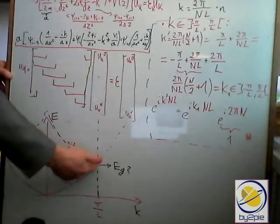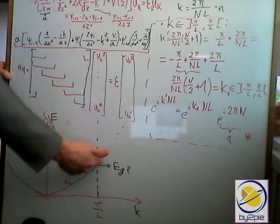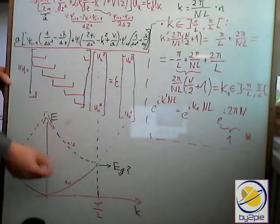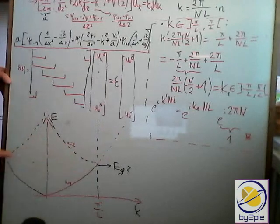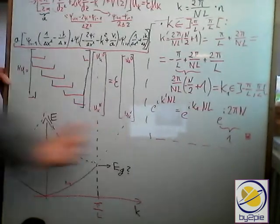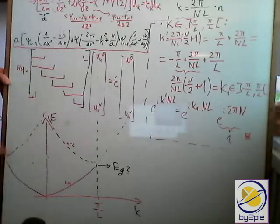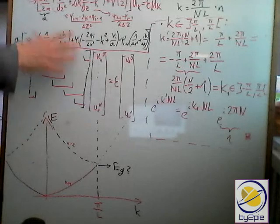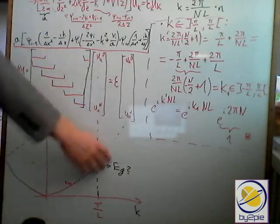So band equals 1, we have this band and of course it would continue to grow like a parabola. But since we have the Brillouin zone, we can move, for example, this guy there and the guy from the other side there. This is why we end up with the band gap which is going to grow in the first Brillouin zone.